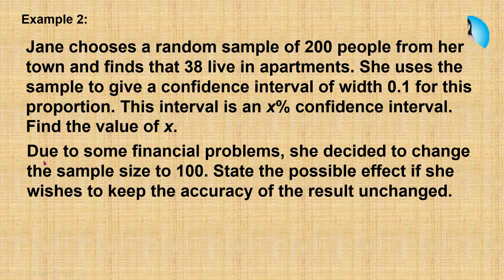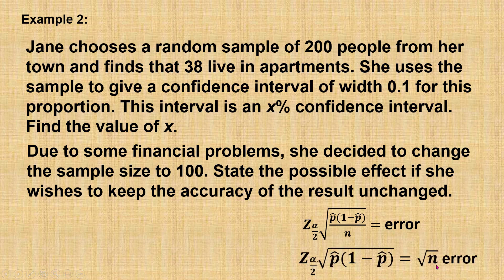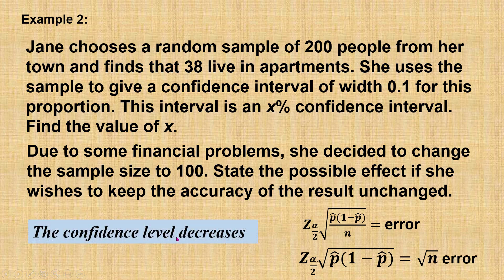For the second part: due to some financial problems, she decided to change the sample size to 100. State the possible effect if she wishes to keep the accuracy of the result unchanged. The estimation error for the population proportion — when accuracy is unchanged, the error is also unchanged. When the error is unchanged, the sample size is directly proportional to the z value. So when we reduce the sample size, the z value must decrease to keep the error unchanged. If the z value decreases, the confidence level also decreases. Therefore, the possible effect is that the confidence level decreases.